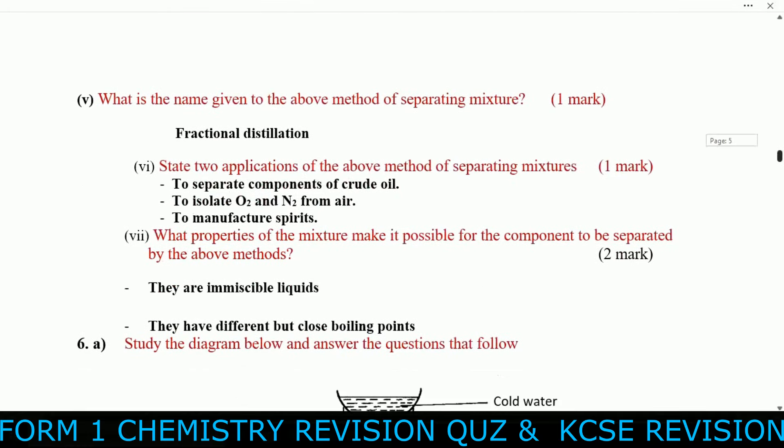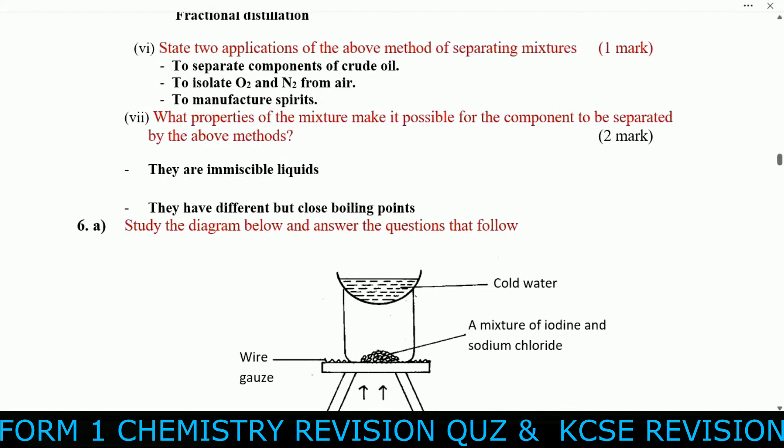The name given to this method of separating the mixture is fractional distillation. Two applications of this method: it can be used to separate components of crude oil; it can be used to isolate oxygen and nitrogen gas from air; it can also be used to manufacture spirits. The property of the mixture that makes separation possible is that the liquids have different but close boiling points.